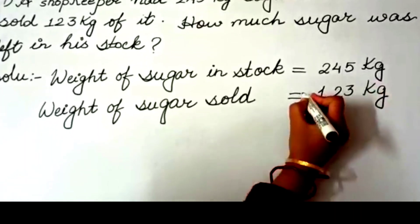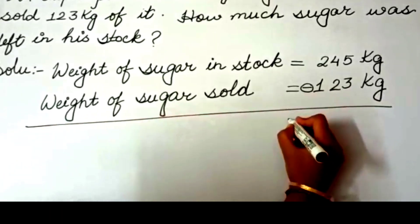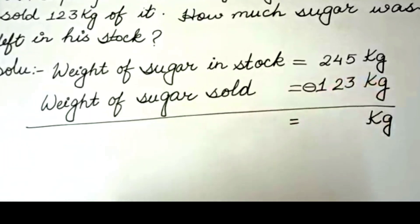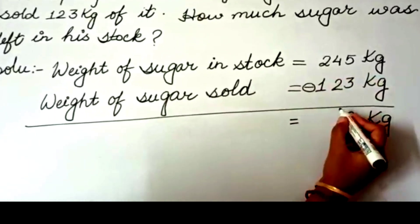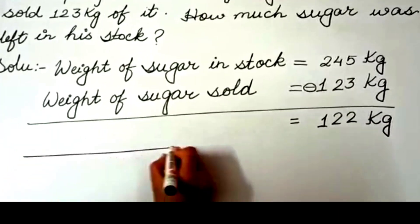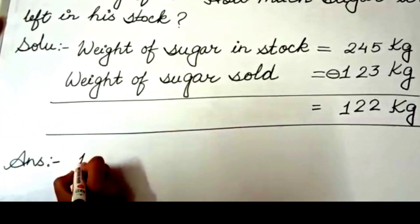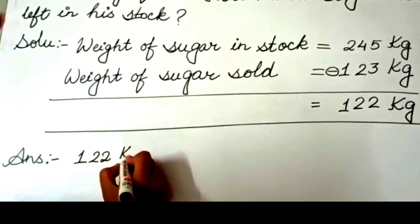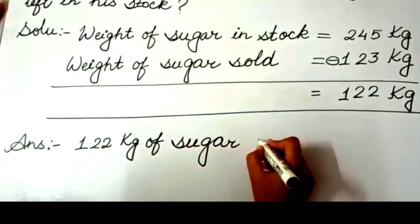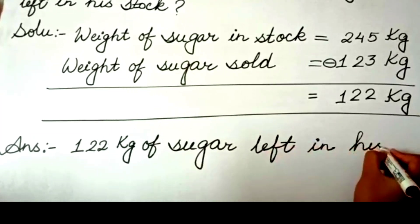Now let us do subtraction by putting a subtraction sign. First we will write kilogram. If we subtract 3 from 5 we get 2; 2 from 4 gives 2; and 1 from 2 gives 1. So the answer is 122 kilograms of sugar left in his stock.